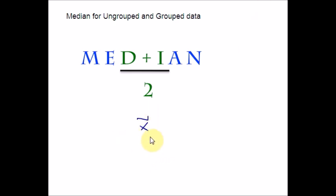Median is also known as positional average and it is denoted by x tilde. Now let us see how to find the median for ungrouped data and median for grouped data.